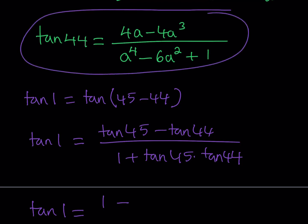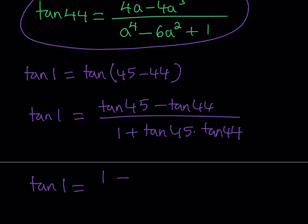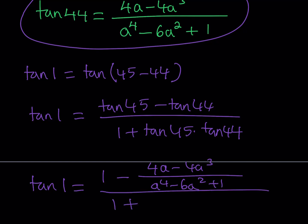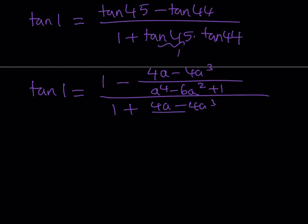I'll replace tangent 45 with 1 and tangent 44 with our expression. So the numerator is 1 minus (4A minus 4A cubed) over (A to the fourth minus 6A squared plus 1). The denominator is 1 plus 1 times tangent 44, which is 1 times (4A minus 4A cubed) over (A to the fourth minus 6A squared plus 1). We've now found tangent 1 in terms of A — we just need to simplify it.